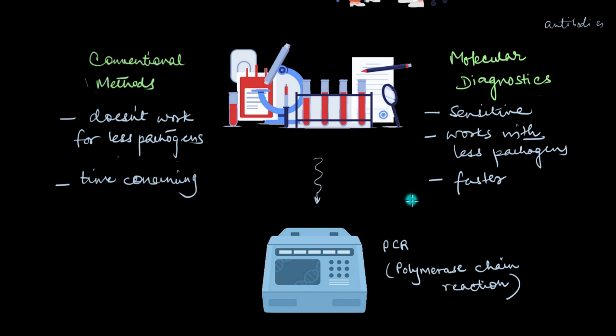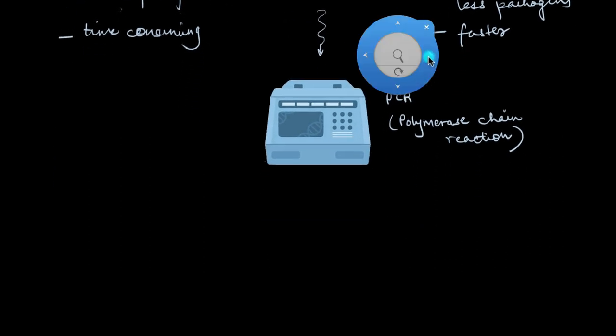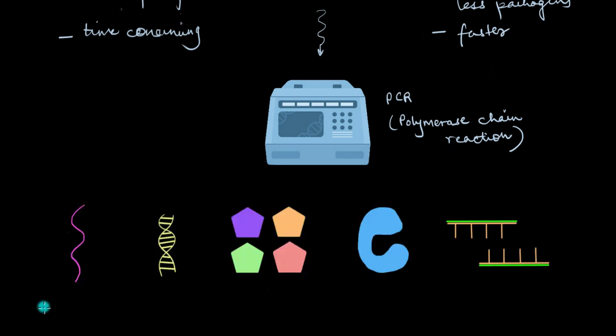Now some of you may already know the mechanism behind it, but let's do a quick rundown of it anyway. Let's say that we want to amplify the COVID virus RNA. So this is our COVID virus RNA. Now to make PCR work, we're going to need four different things. We're going to start off with a double stranded DNA template. Then we need four different types of nucleotides.